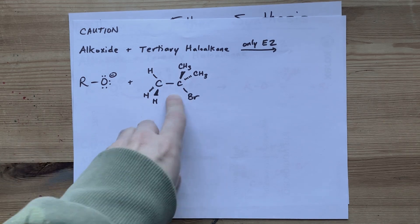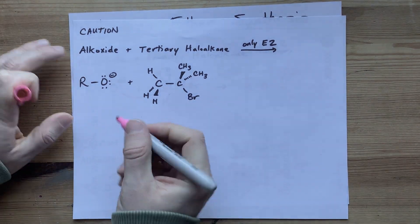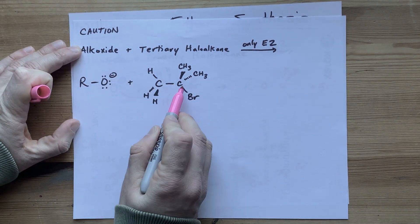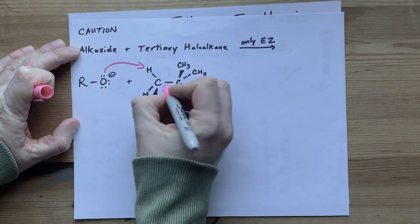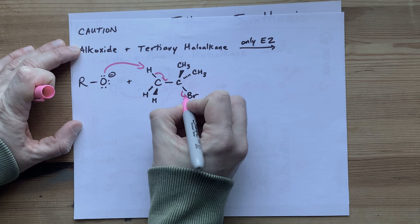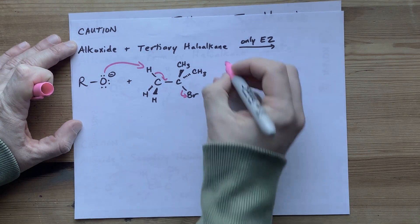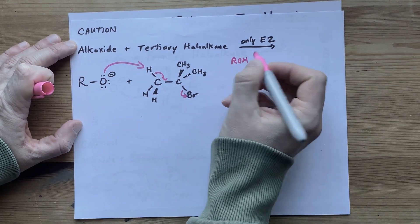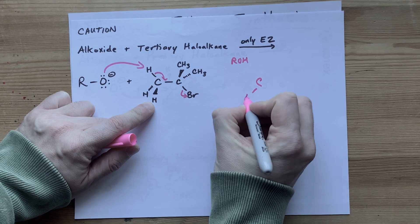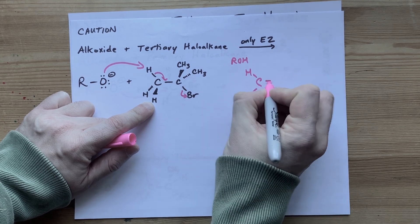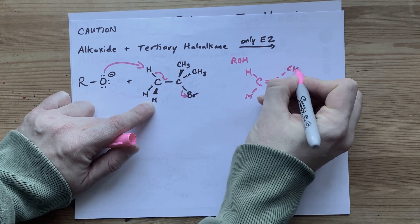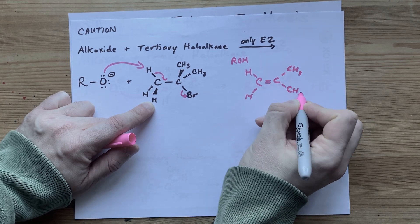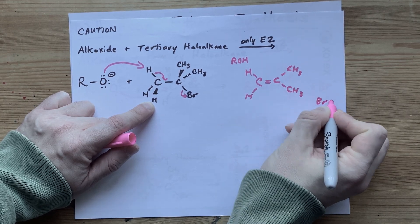Anyways, for a tertiary haloalkane, it ends up only being the E2 reaction. It can't attack from the backside here, so all it can do is take that H away, same as we did on the other page. You end up with the ROH. You end up with an alkene because you've now formed a double bond there. And that carbon had two methyl groups on it as well, along with the bromide that's formed.